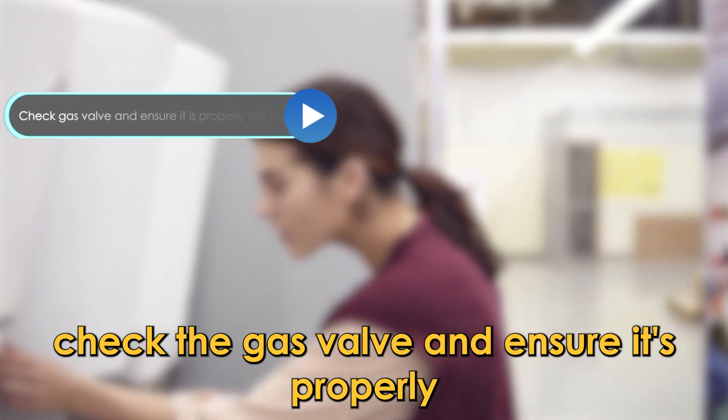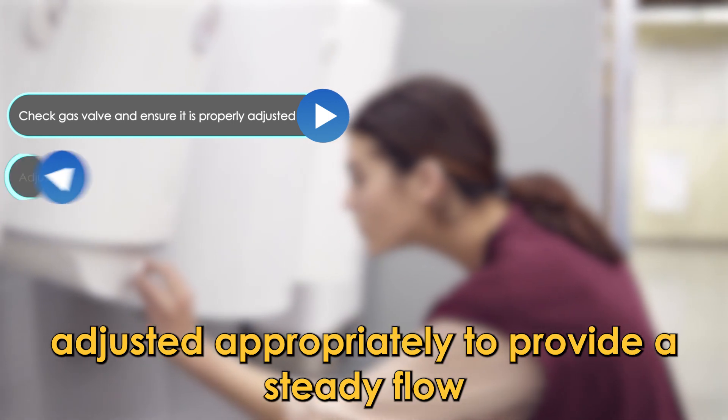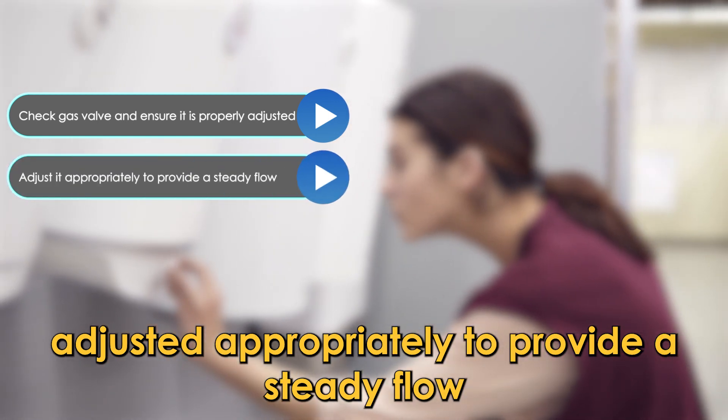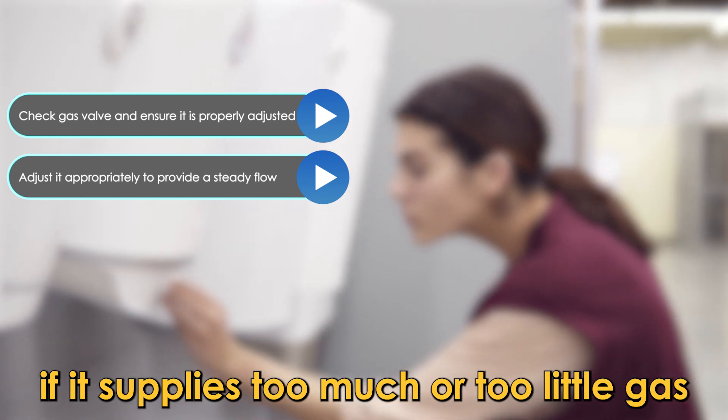Inspect the gas valve. Check the gas valve and ensure it's properly adjusted to supply just the right amount. Adjust it appropriately to provide a steady flow if it supplies too much or too little gas.